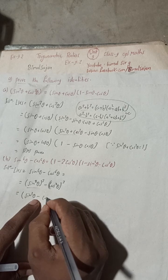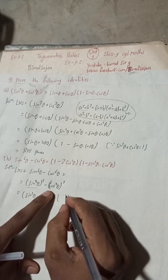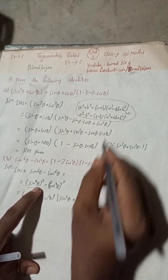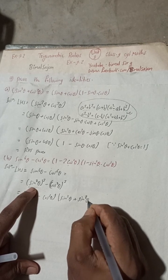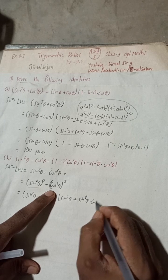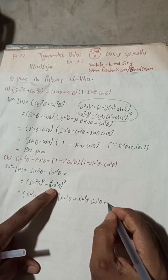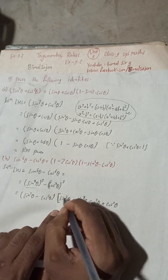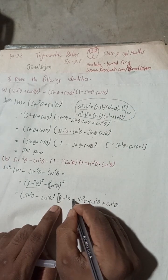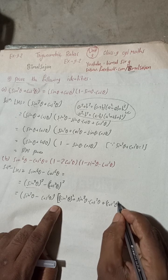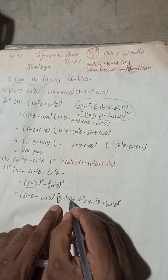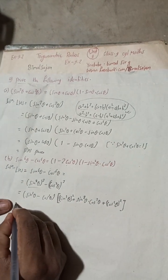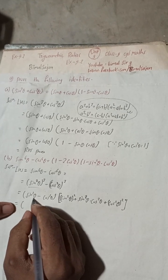So applying a³ − b³ = (a − b)(a² + ab + b²): in place of a there is sin²θ and b is cos²θ. So we get (sin²θ − cos²θ) multiplied by the bracket sin⁴θ plus sin²θ·cos²θ plus cos⁴θ. Here a² means the square of sin²θ and b² means the square of cos²θ.